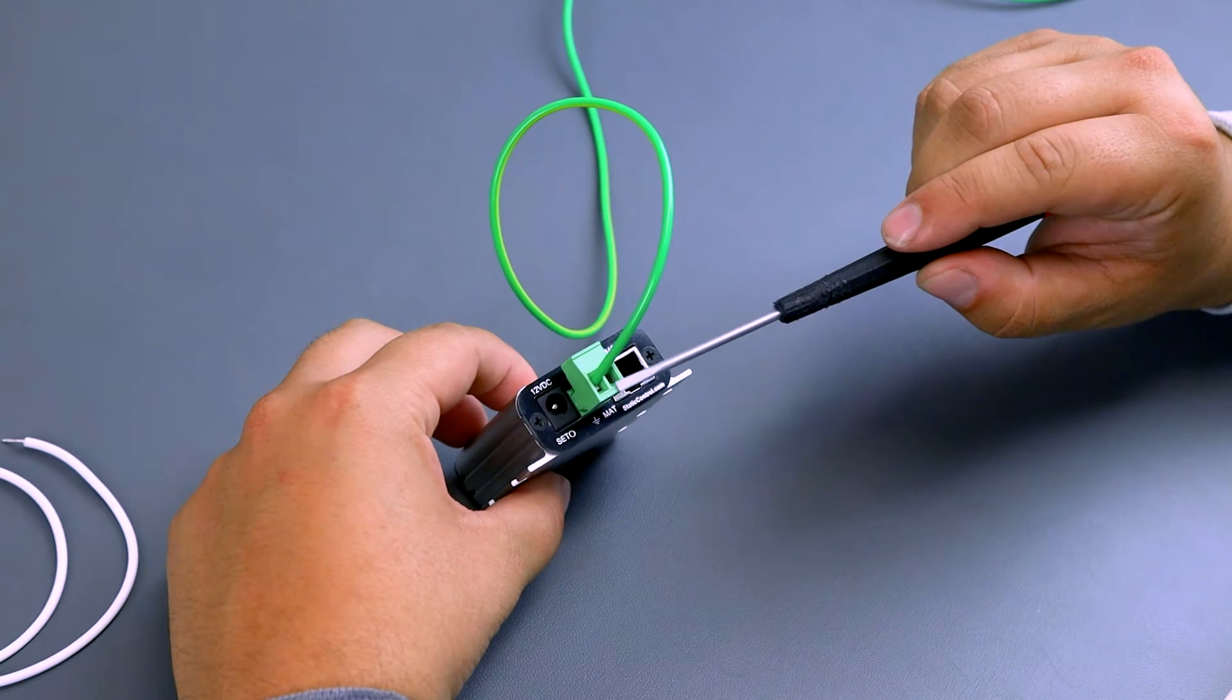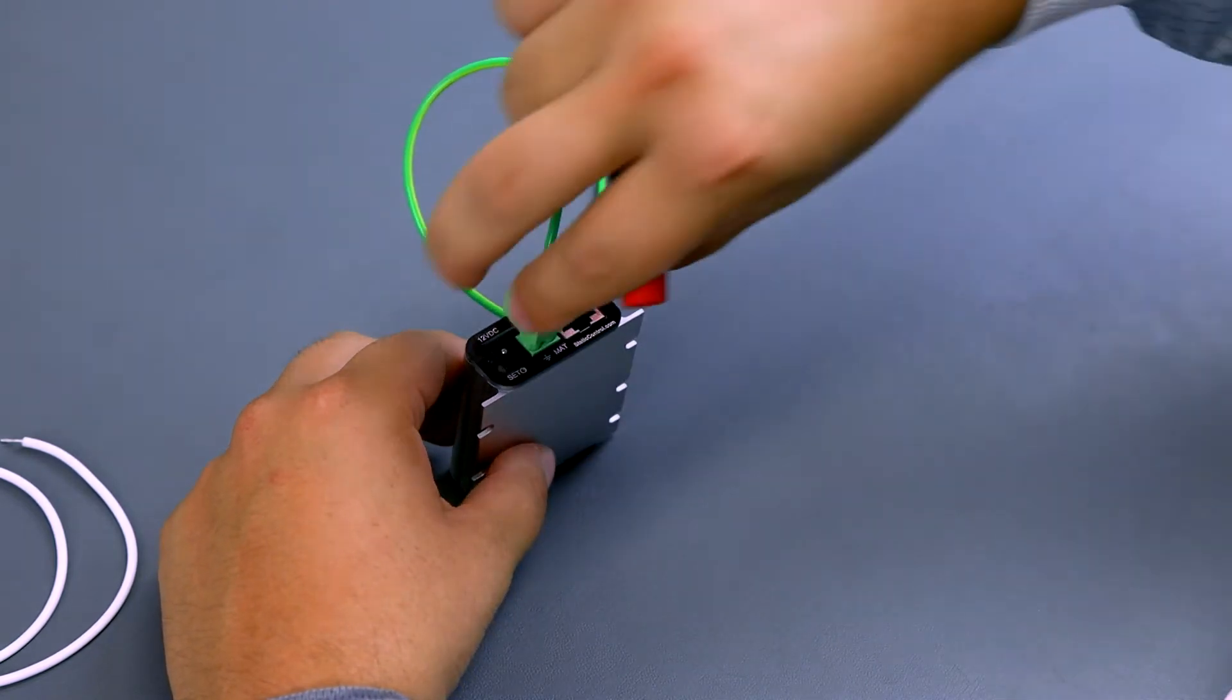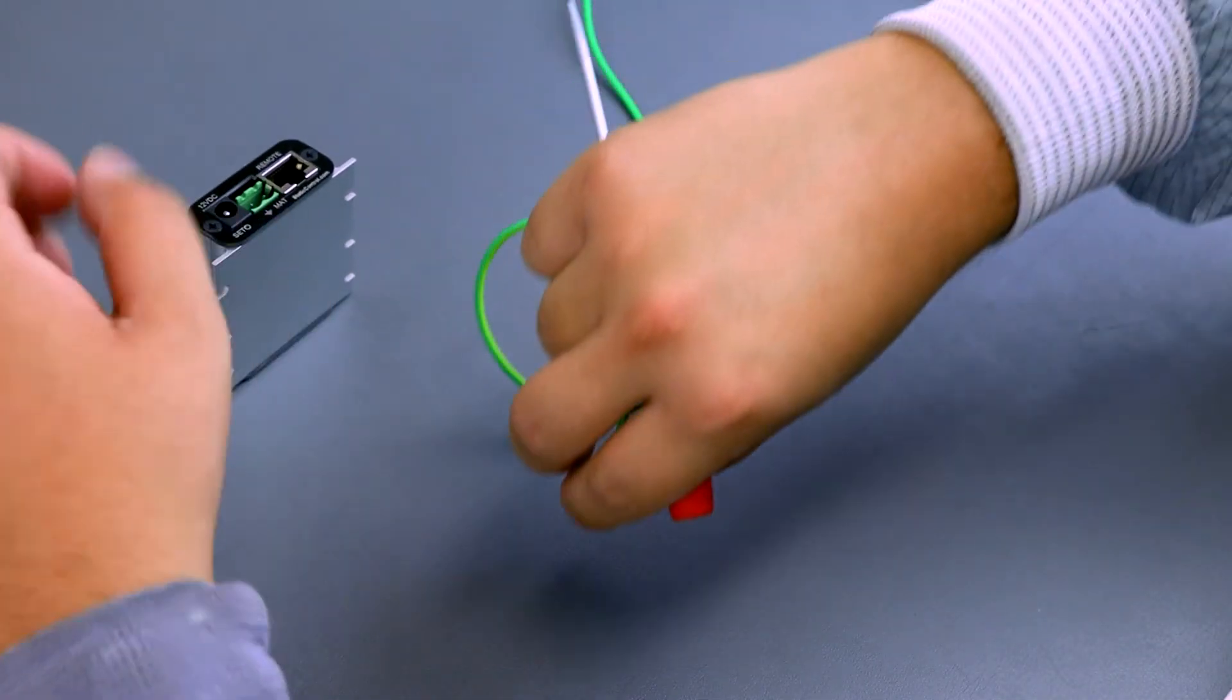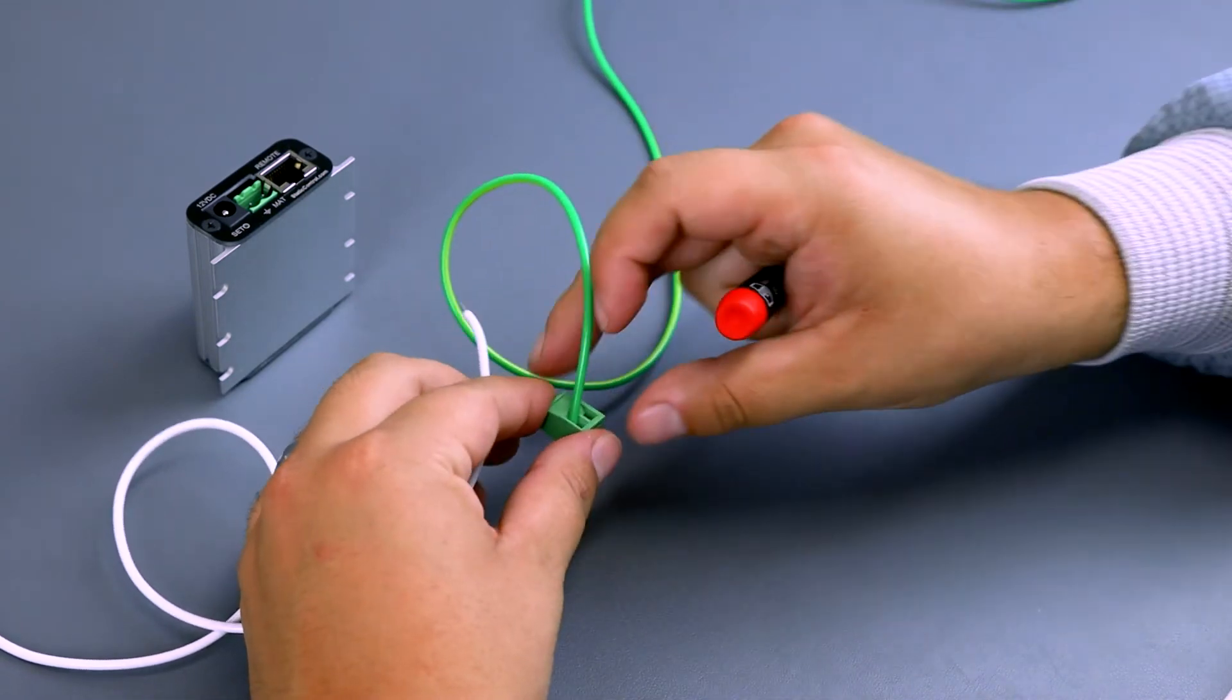Connect the other end of the mat monitor cord to the remaining open slot on the terminal block and again using a small screwdriver secure the tinned end of the cord in place.